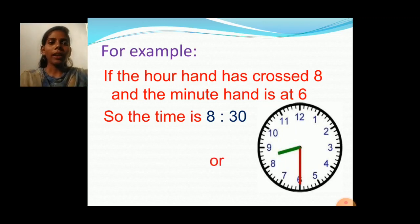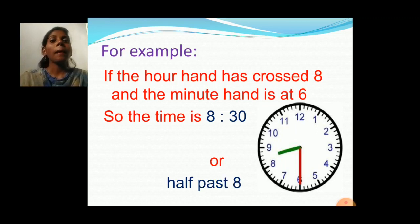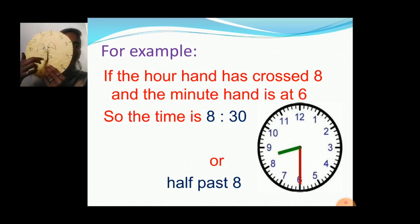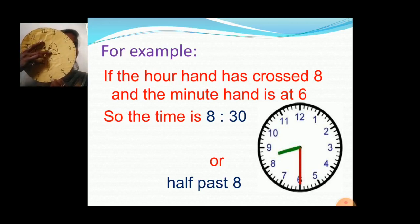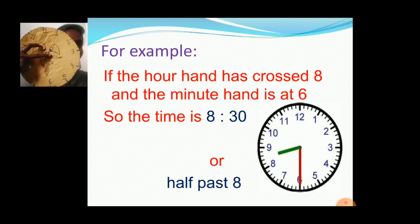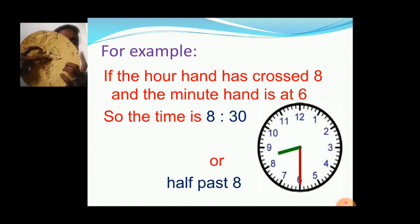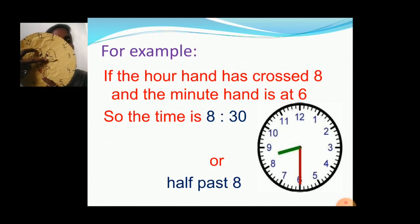Half past 8. Half spelling: H-A-L-F, Past spelling: P-A-S-T. So half past 8. Now look at another example. If the hour hand has crossed number 3 and the minute hand is at number 6, the time is 3:30 or half past 3, because it crossed number 3. Always we read the hour hand first, and then we read minutes. So here, 3 hours 30 minutes. Instead of 30 minutes, we can write half past 3.